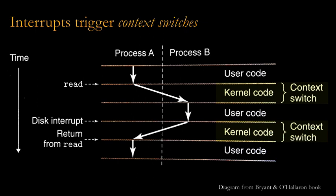The kernel decides to run process B, and doing that requires a context switch. That's where you take the in-CPU state of process A that was previously running, store it in kernel memory for process A for safekeeping, then look at process B and find the last CPU state it had in its kernel memory and copy that into the CPU so it can run. In this example, process A calls read, the kernel runs briefly to set up the disk read, the disk read happens in the background, and then process B runs.